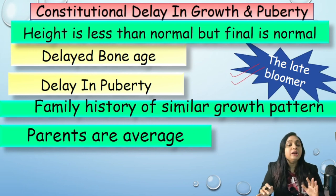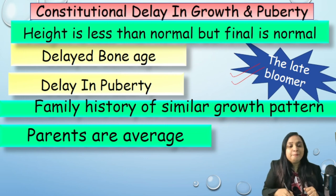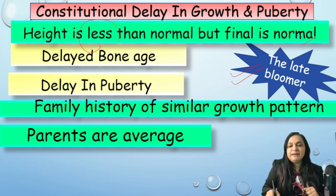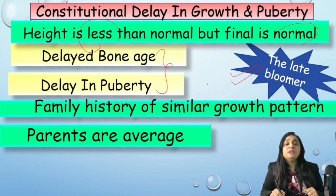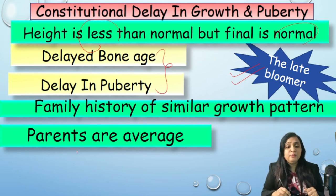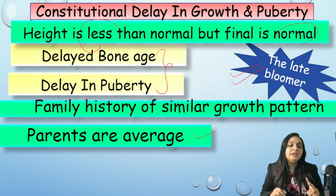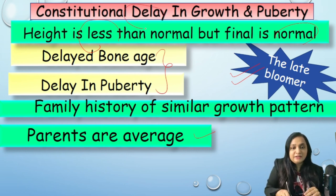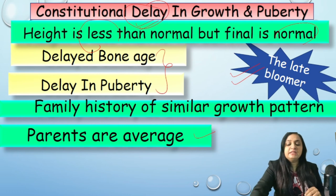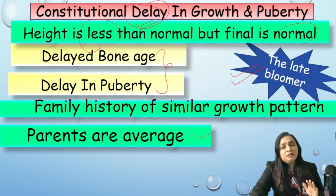For constitutional delay in growth and puberty (CDGP), think of the 'late bloomer.' The final height is normal but achieved late. There is a delay in bone age and a delay in puberty, and a family history of a similar growth pattern — for example, the father was also short but gained normal height after the pubertal growth spurt. Parents are of average height, not shorter. The key mnemonic: CDGP has delay — bone age is delayed and puberty is delayed.